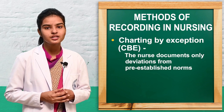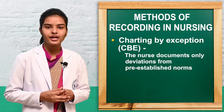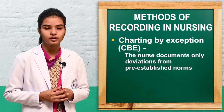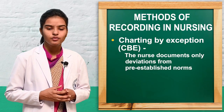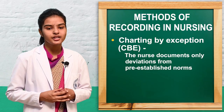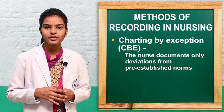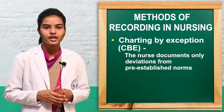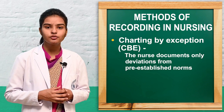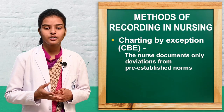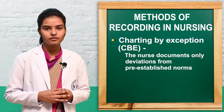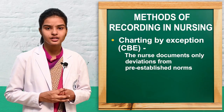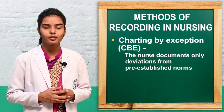Moving towards the next method: charting by exception, shortly known as CBE. In CBE, charting is only done for deviations and pre-estimations — meaning if the patient has any kind of pre-estimated finding or some deviation, that will be charted. This kind of charting is known as charting by exception.